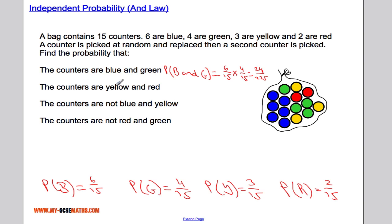The probability of choosing yellow and red is 3 out of 15 multiplied by 2 out of 15, which gives 6 out of 225.